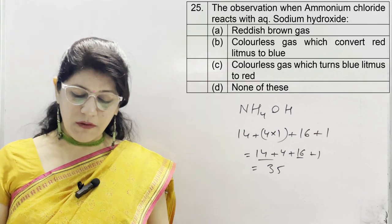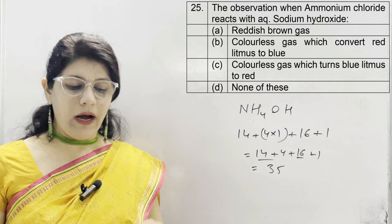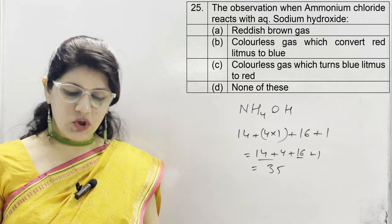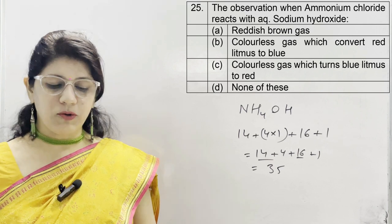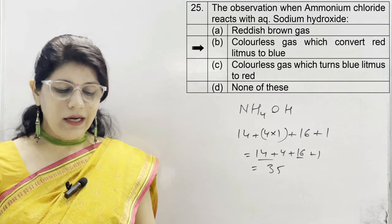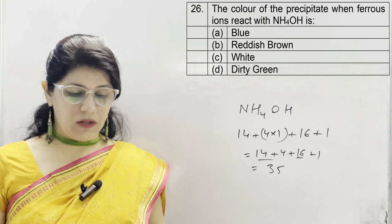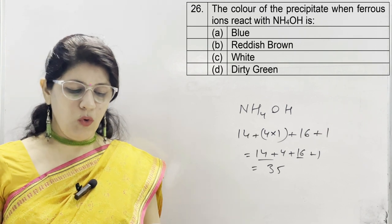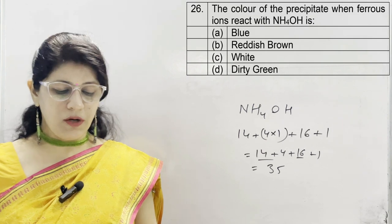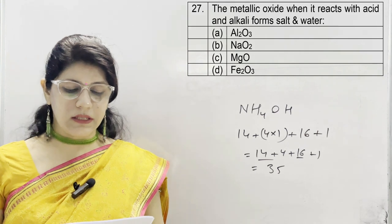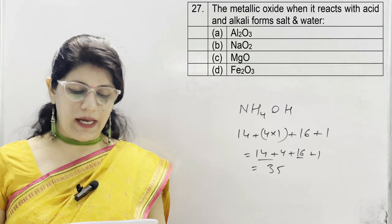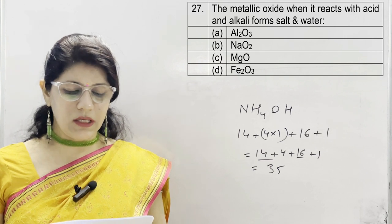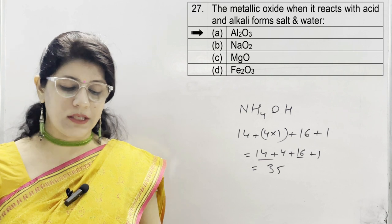Question 25: the observation when ammonium chloride reacts with aqueous sodium hydroxide. Options: A reddish brown gas; B colorless gas which turns red litmus to blue; C colorless gas which turns blue litmus to red; D none. Correct option is B — colorless gas turning red litmus to blue. Question 26: the color of precipitate when ferrous ions react with NH₄OH is: A blue, B reddish brown, C white, D dirty green. Dirty green is correct. Question 27: the metallic oxide reacting with both acid and alkali to form salt and water. Options: A Al₂O₃, B NaO₂, C MgO, D Fe₂O₃. Correct option is A, aluminium oxide Al₂O₃.